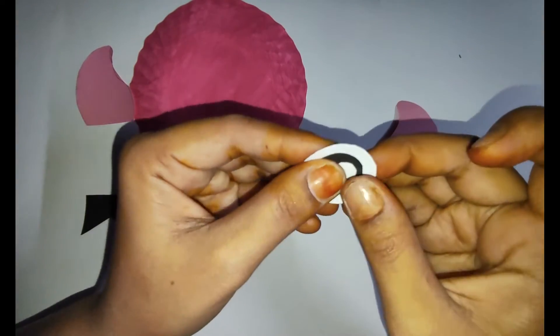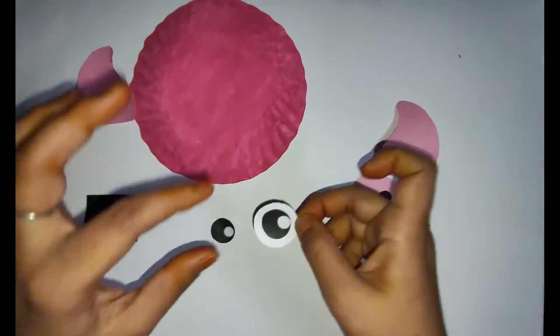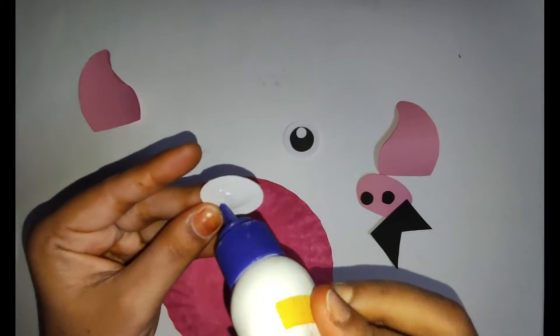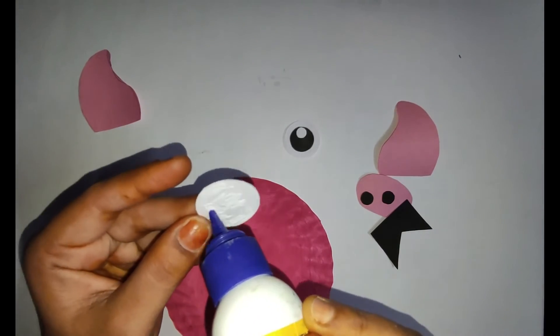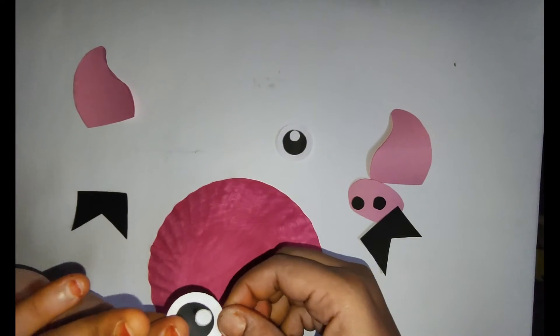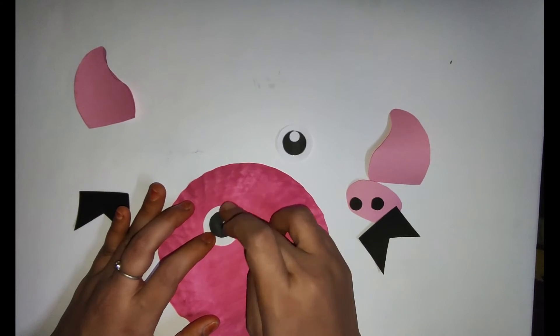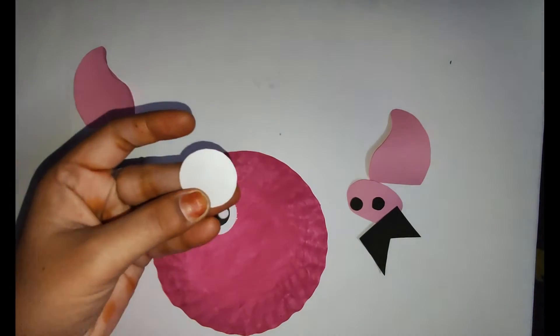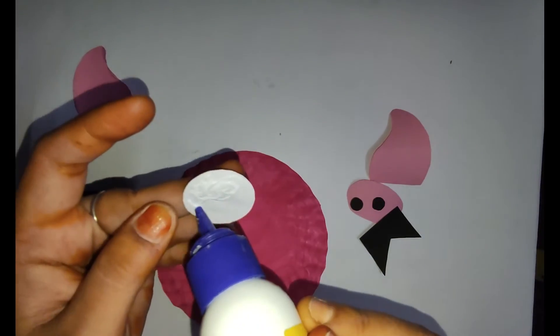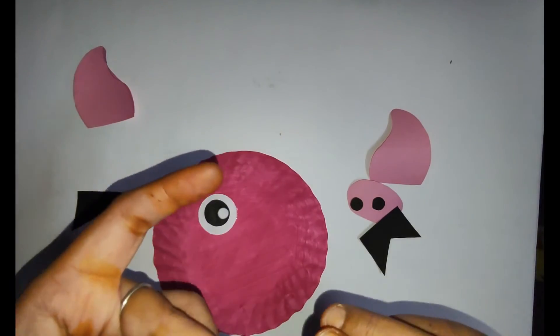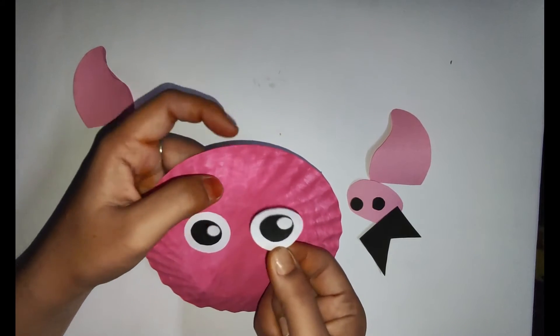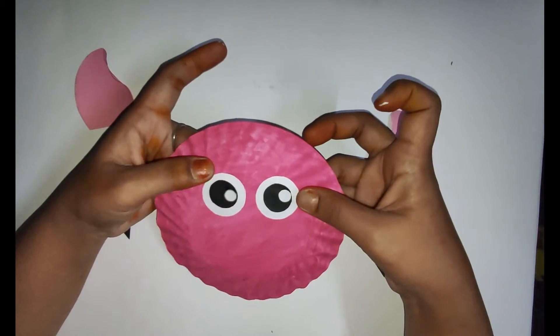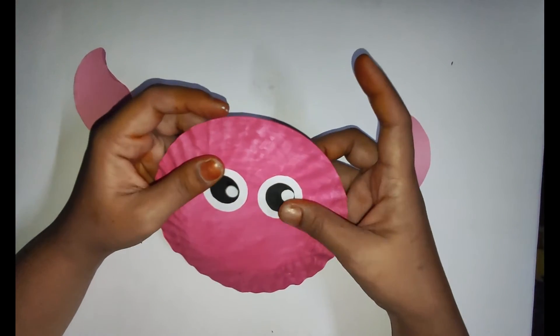The eyes are almost ready. Now it's time to place it in the face. Instead of the eyes, you can put two holes in the place of the eyes and you can use this as a mask for kids. Yeah, we're done with the eyes. Next we'll paste the nose.